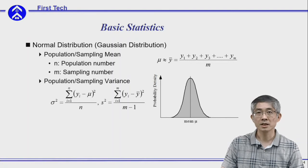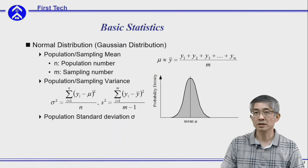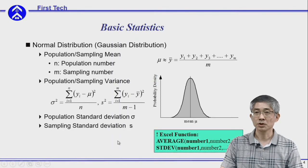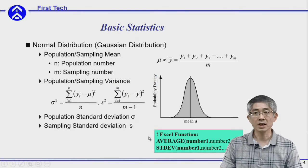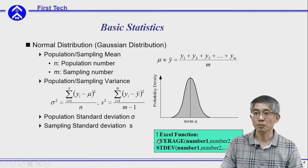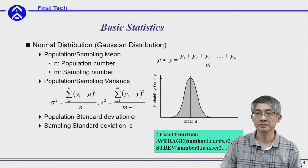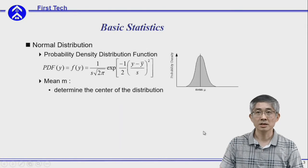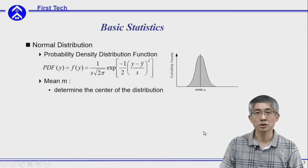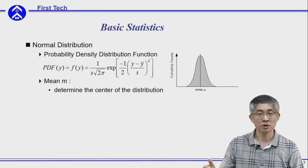We often use standard deviation, which is the square root of the variance. Using Excel, it is very easy to calculate the sample average and standard deviation — you may use this equation and try that by yourself. Most of the time we will use normal distribution to describe the distribution of your properties.